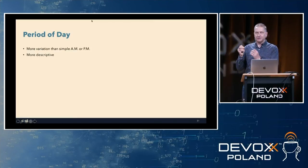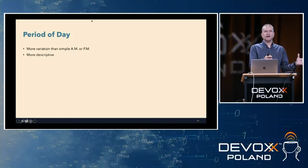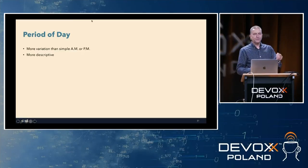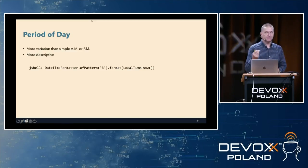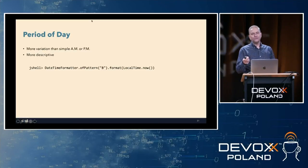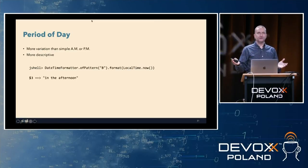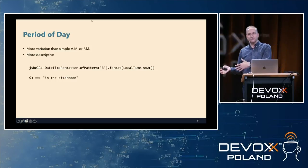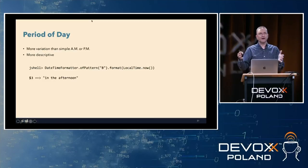Period of Day is another small API change. If you look at the time of day, it's either morning, afternoon, or evening — A.M. or P.M. With Period of Day we have a more descriptive way of describing where we are in the day. In JShell you can do DateTimeFormatter.ofPattern with the new pattern letter capital B — they were running out of letters — and format LocalTime.now(). Depending on when you run it, you'll see 'in the afternoon', 'in the morning', or 'in the evening'.